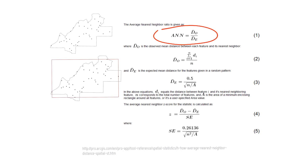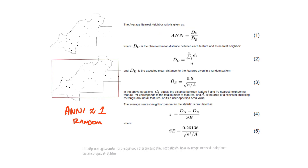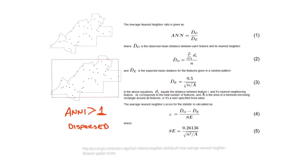This analysis is going to give us an index that tells us whether we have a random, clustered, or dispersed pattern. If the index is approximately 1, then we have a random pattern. If the average nearest neighbor index is less than 1, then we have clustering, meaning that D observed is less than D expected. And if that index is greater than 1, then our points are dispersed.